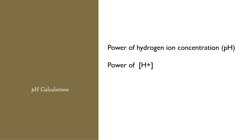In this video, we will do some pH calculations to determine the acidity and basicity. We have to quantify the acidity and basicity using pH calculation. pH means: P stands for power and H stands for the concentration of hydrogen ion — so that means the power of hydrogen ion concentration.